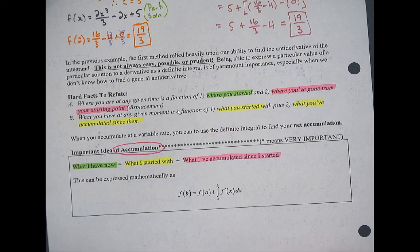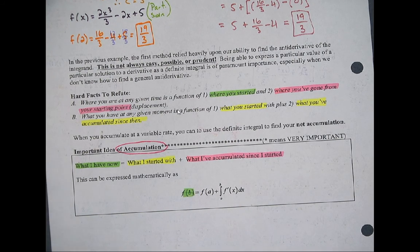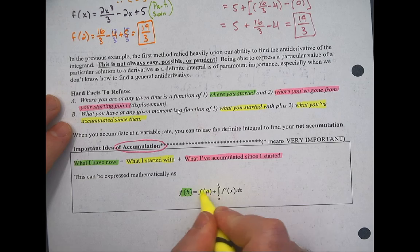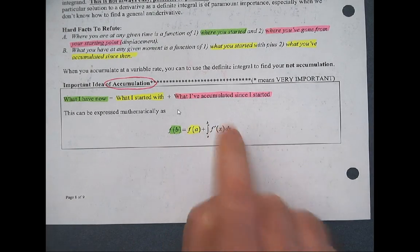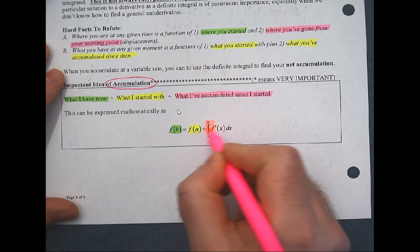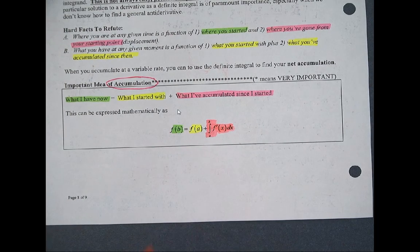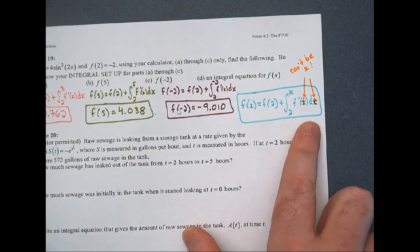So let's just go back and talk about that one more time before we move on. This is this really important idea of accumulation. What I have now, in other words what I want, I want f(b). That's equal to what I started with, wherever I began. It doesn't matter here. I can pick whatever I want as my beginning value, and then I would have to go from wherever I started plus whatever I accumulated. Whatever I started plus what I've done since then, basically what I've accumulated, will take me to where I am right now.